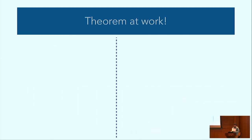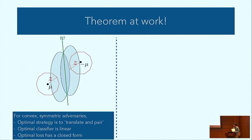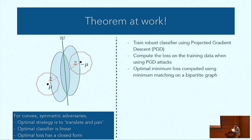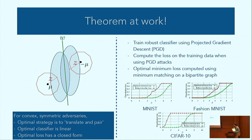One simple case of interest is Gaussian data with adversaries bounded within convex balls. We can show that the optimal strategy is to translate the distributions and pair them up. The optimal classifier is a linear classifier and the optimal loss has a closed form. Quite interestingly, we can use this theory to argue about the gap between the optimal loss and the robust loss of current state-of-the-art robustly trained classifiers. For small perturbation values there isn't much gap, and state-of-the-art PGD-trained classifiers are already somewhat close to the optimal loss, but a gap appears for larger perturbation budgets.